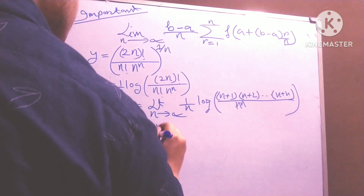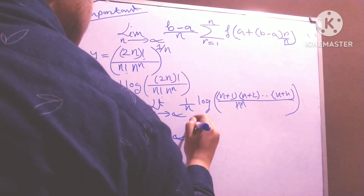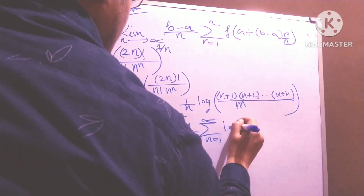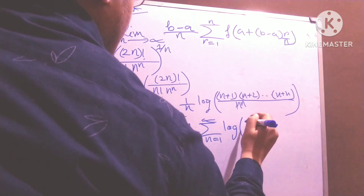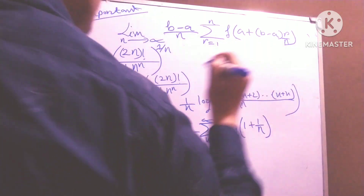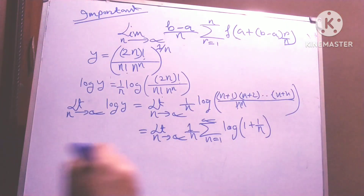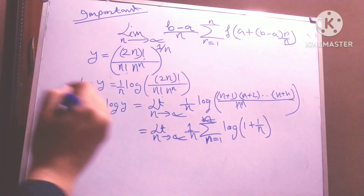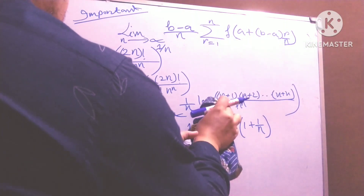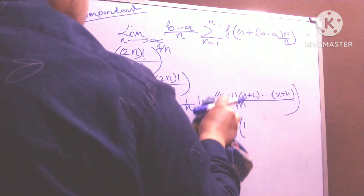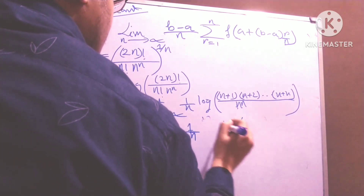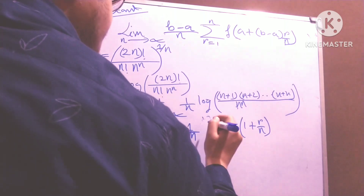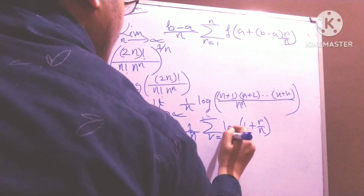So limit n to infinity, 1 by n can be given as summation r equals 1 to n of log — using log properties — log of 1 plus r by n. And it is summation r equals to 1 to n of log(1 + r/n).